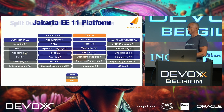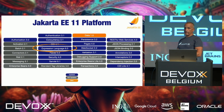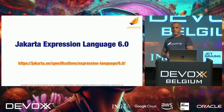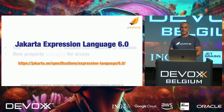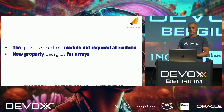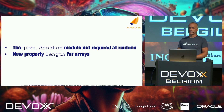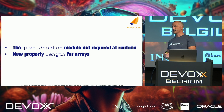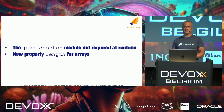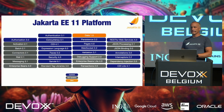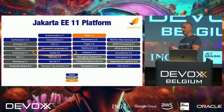For Expression Language, they're removing things that are no longer required, like Java Desktop support, and adding some properties. It's a maintenance update release — the reason it's a major version is that they deprecate and remove some things as well.